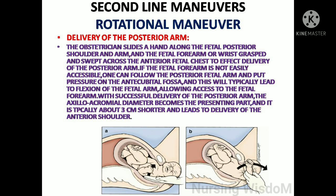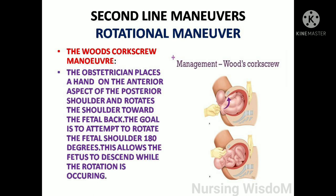The Wood's corkscrew maneuver involves the obstetrician placing a hand on the anterior aspect of the posterior shoulder and rotating it towards the fetal back. The goal is to rotate the fetal shoulder 180 degrees. This allows the fetus to descend while rotation occurs, relieving impaction and helping in delivery of the baby.